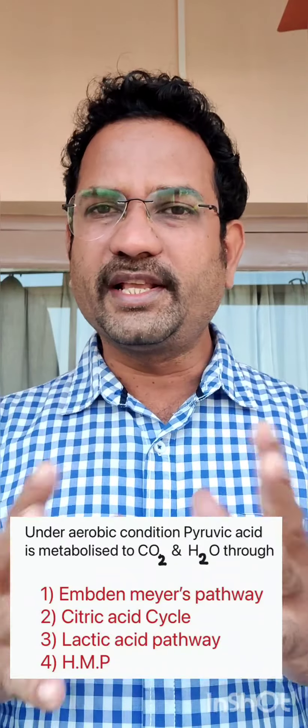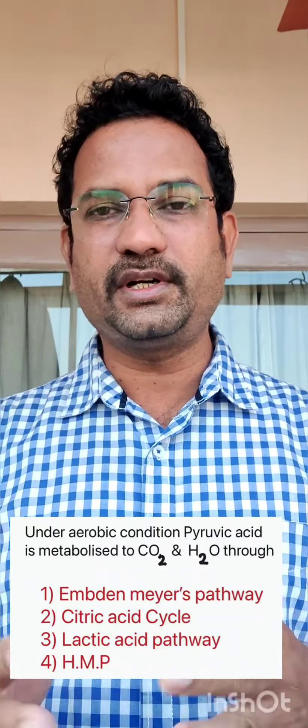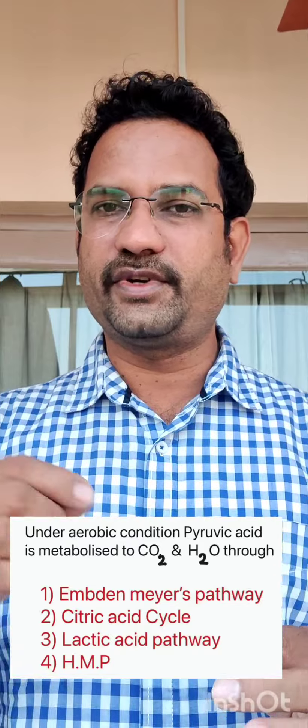And what about HMP shunt — hexose monophosphate shunt, which is also known as the pentose phosphate pathway? This is an alternate oxidation pathway for glucose. Glucose is converted to ribose 5-phosphate and it also generates NADPH. Ribose 5-phosphate is required for RNA and DNA, and those pentose phosphates are formed in the pathway called the hexose monophosphate shunt.